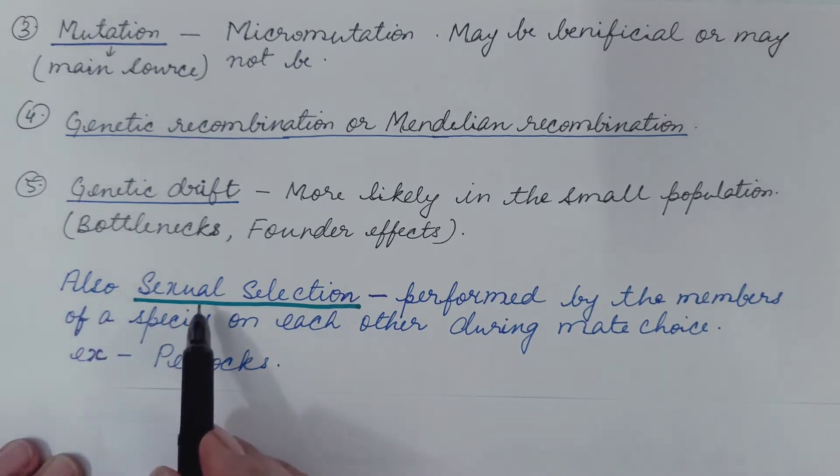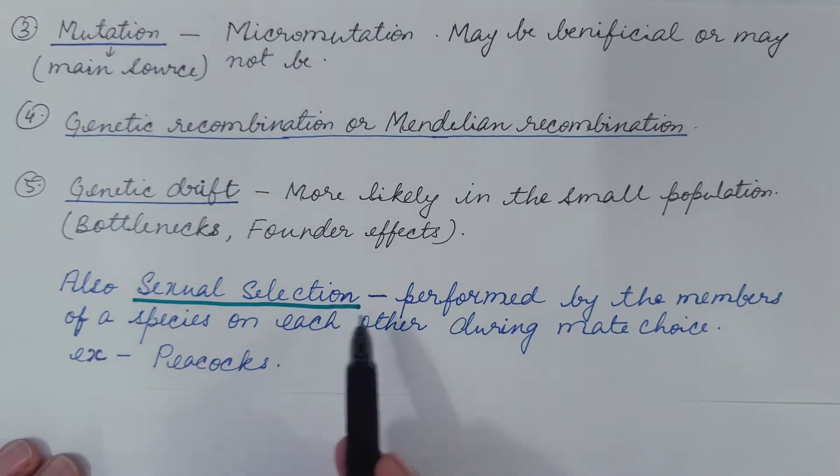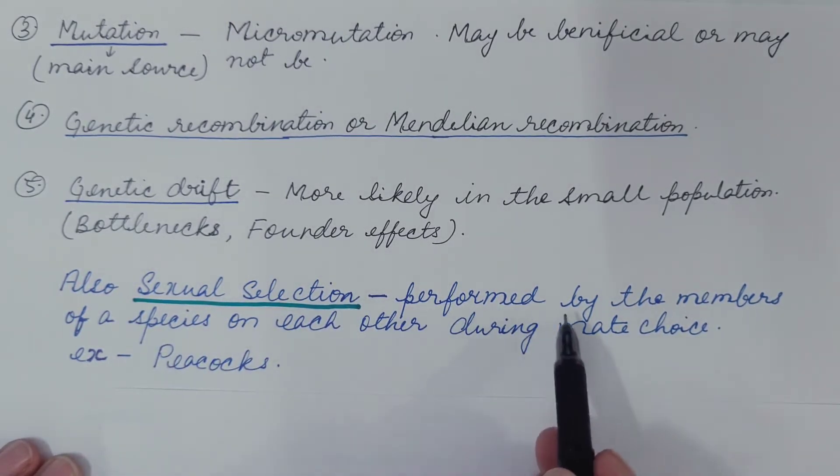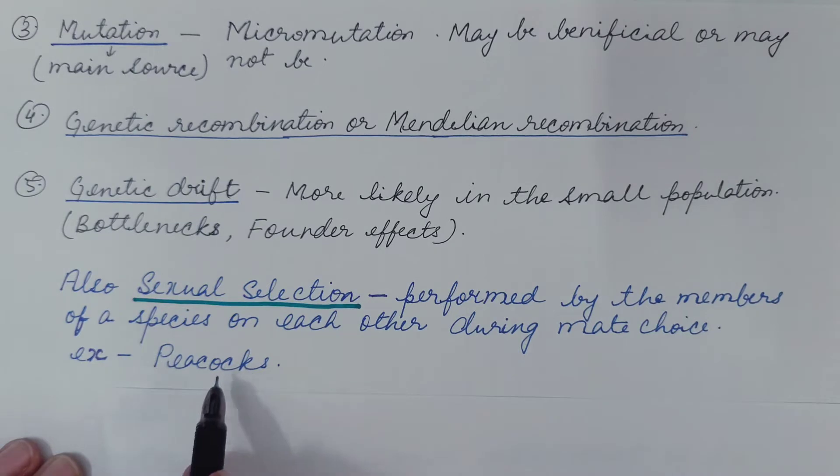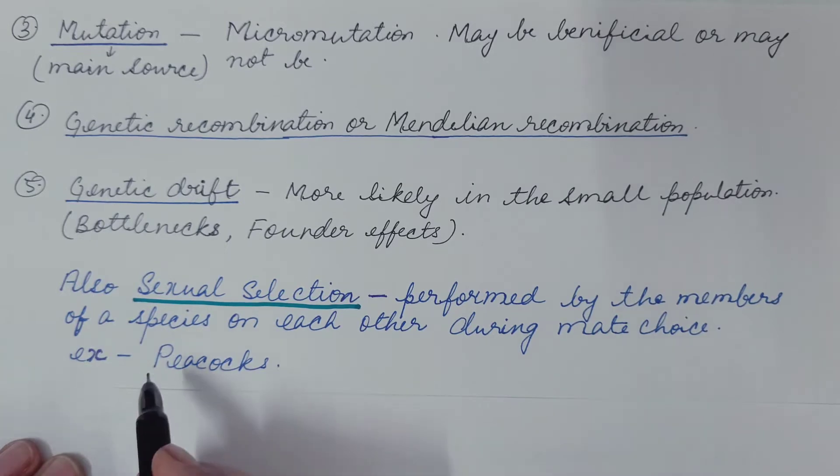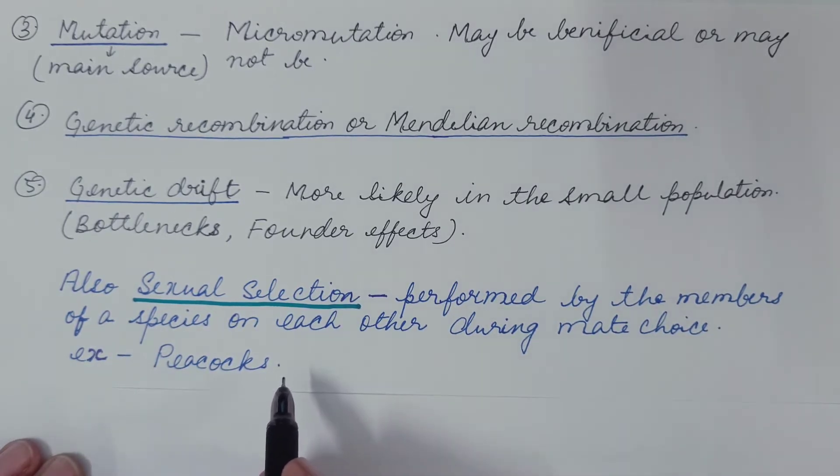Also there is a special form of sexual selection. It is performed by the members of a species on each other during mate choice. Example in peacocks male has colorful tail to attract its mate but it is also disadvantageous because they can be easily spotted by predators.